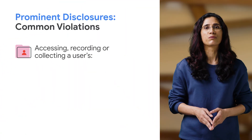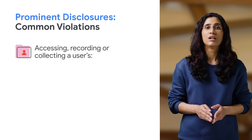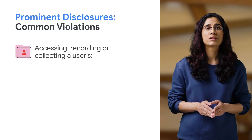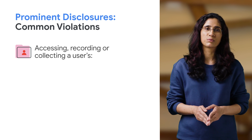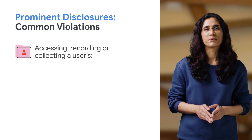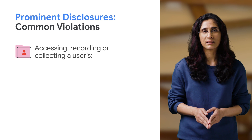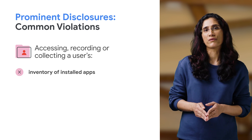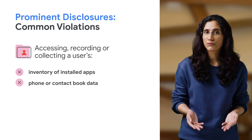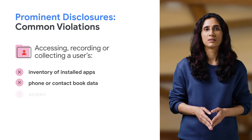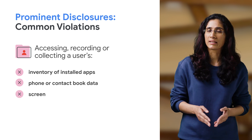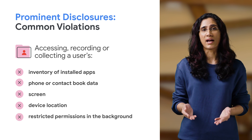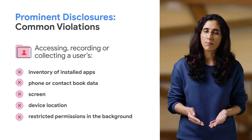Here are some examples of common violations of apps that don't treat the following data as personal or sensitive — they do not comprehensively disclose the use case, and they do not obtain consent when accessing, recording, or collecting a user's inventory of installed apps, a user's phone or contact book data, a user's screen, a user's device location, and restricted permissions in the background for tracking, research, or marketing purposes.